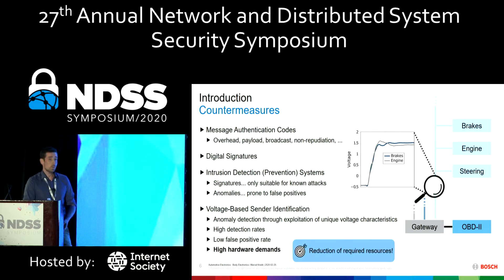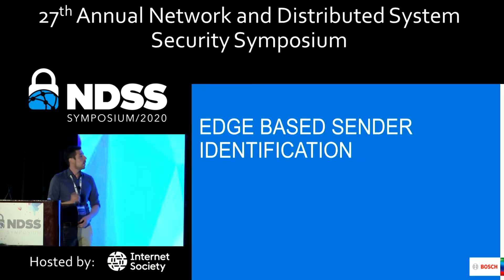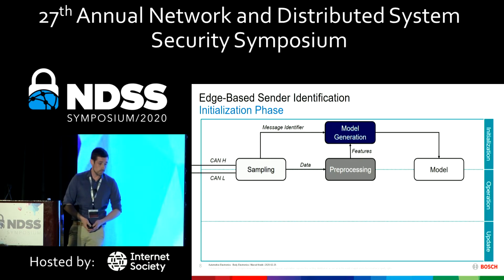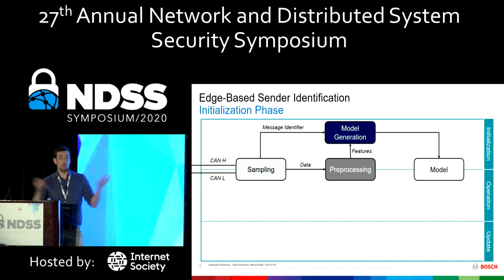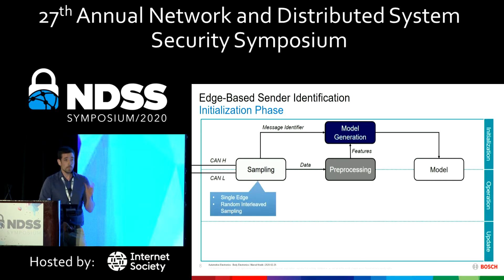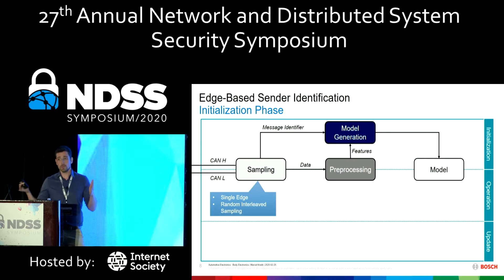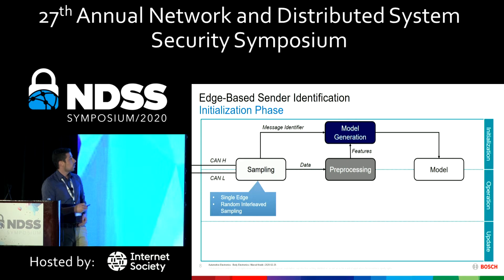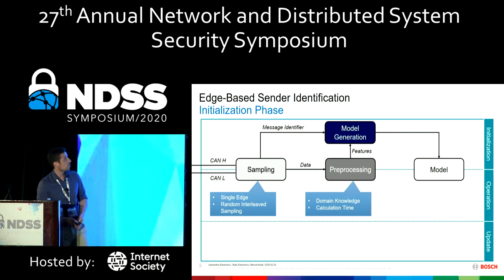Our goal was the reduction of the required resources, which brings us to our edge-based sender identification approach. In the first phase during sampling, we do not record the whole frame but only a single symbol — essentially one bit. Instead of sampling the whole bit with a high sample rate, we sample several points of several edges within one frame and combine them afterwards, so you only need a fraction of the sampling rate. Combined into one composite representative — something like an average edge — this can then be directly fed into preprocessing.